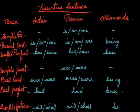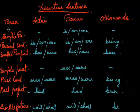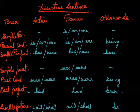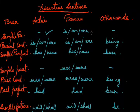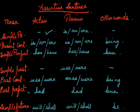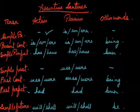Giving you an example as per the chart — if I take an active sentence for simple present, for example, if I say 'she drinks tea,' the passive will be 'tea is drunk by her.'